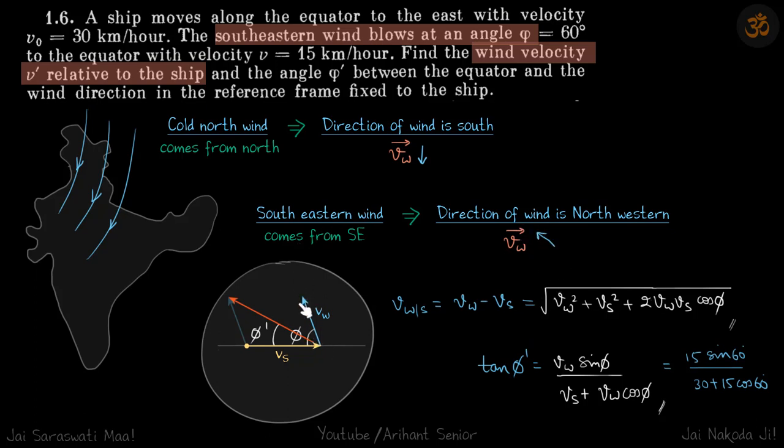Now this is the wind direction and it's making phi angle with the equator, and the ship is traveling towards right with velocity Vs. We need to find the wind velocity with respect to ship.